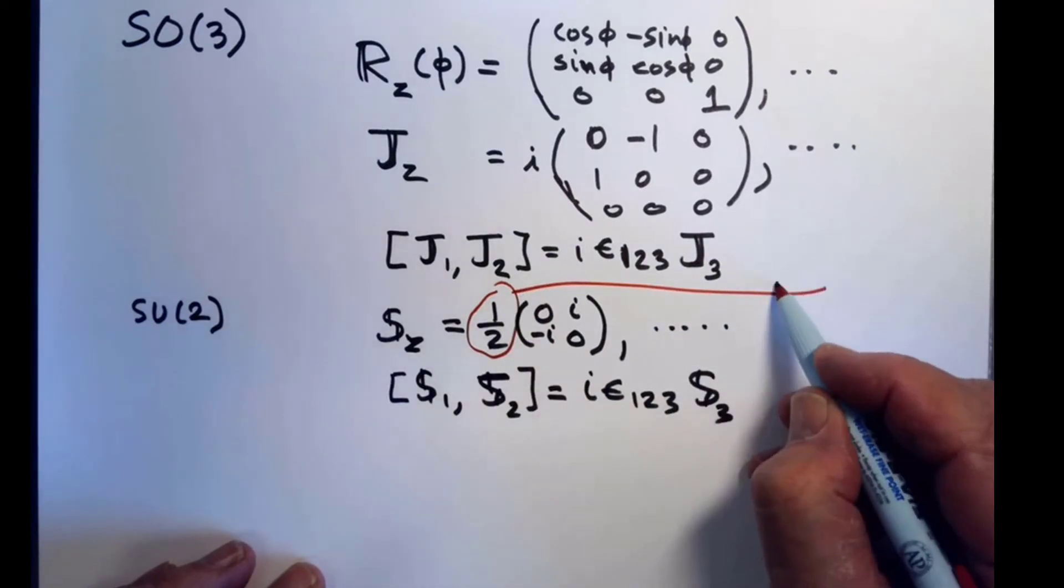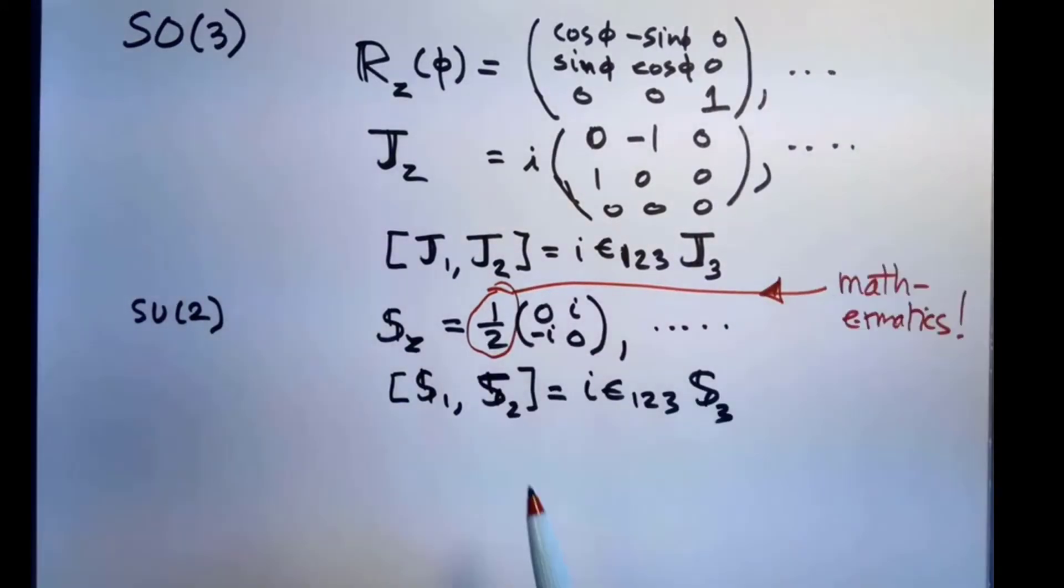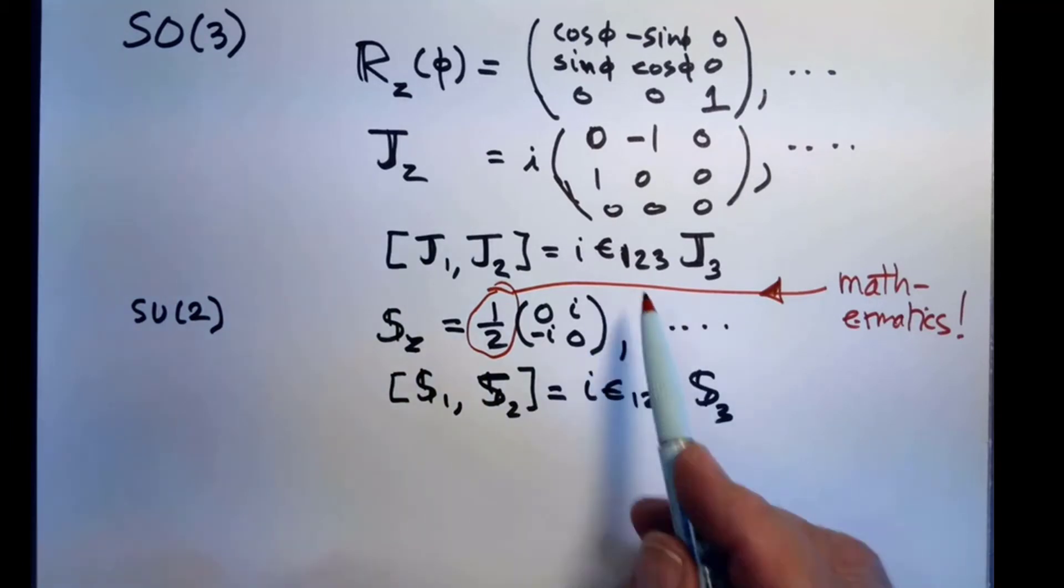So, this is sort of forced on us by mathematics. I don't find this something I would have guessed from intuition. Because if you didn't have it here, we would get an extra one-half here. And that's silly because these guys have the same local structure. They share the same structure constants. So, there are representations of the same group.